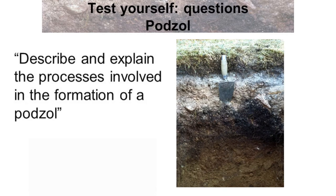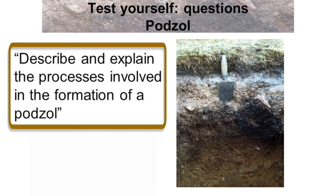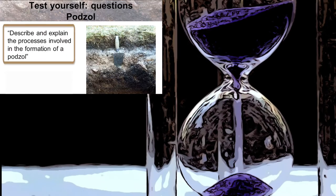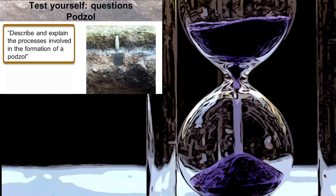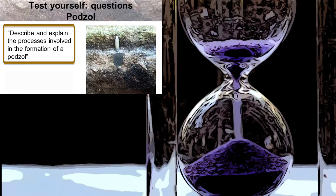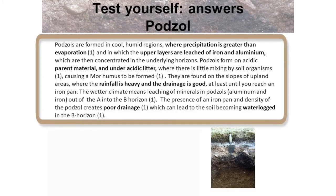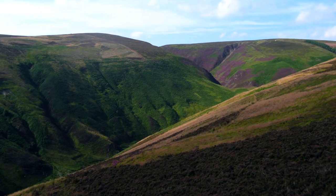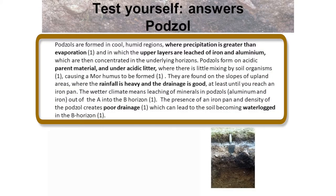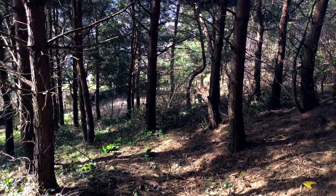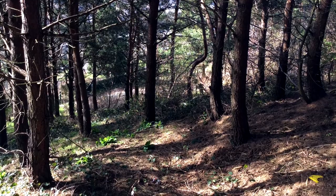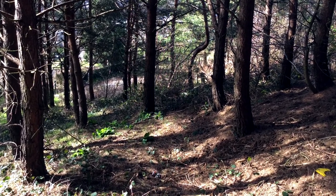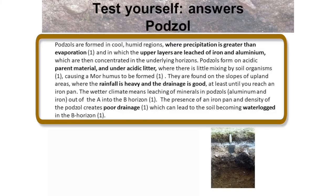Test yourself: describe and explain the processes involved in the formation of a Podzol. Podzols are formed in cool, humid regions where rainfall is greater than evaporation, and in which the upper layers are leached of iron and aluminium, which are then concentrated in the underlying horizons. Podzols form on acidic parent material and under acidic litter, where there is little mixing by soil organisms, causing a mor humus to be formed. They are found on the slopes of upland areas where the rainfall is heavy and the drainage is good, at least until you reach the iron pan in the profile.